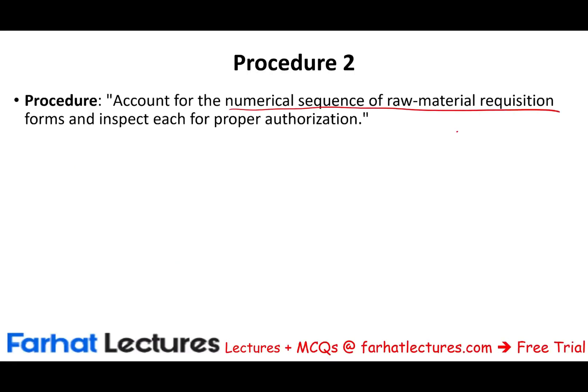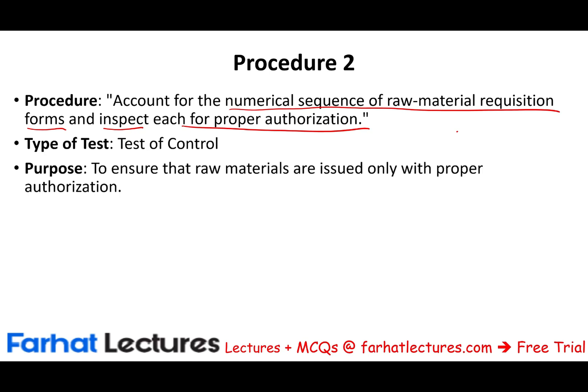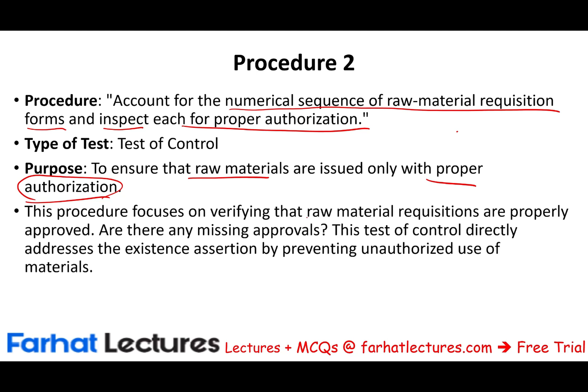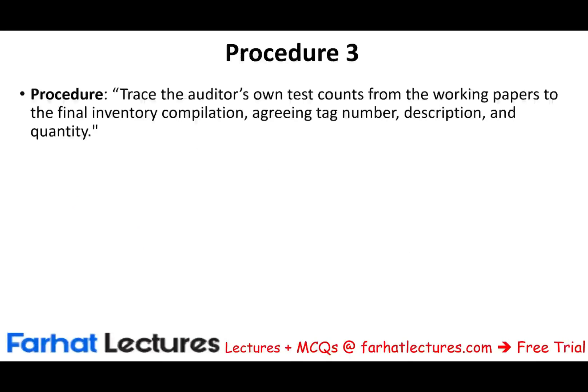Procedure two: account for the numerical sequence of raw material requisition forms and inspect each for proper authorization. We're looking at the raw material requisition form and determining whether, before material is taken out of the warehouse to work in process, it was properly authorized. This is a test of control. The purpose is to ensure raw materials are only issued with proper authorization. This also deals with the existence assertion — there's no unauthorized use of material.